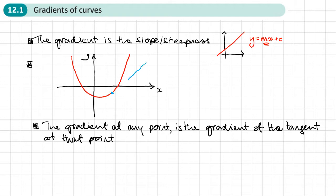It's going to change depending on where I'm looking. If I look here, for example, and try to draw a tangent there, it's just touching the curve at that point. This would be the gradient.